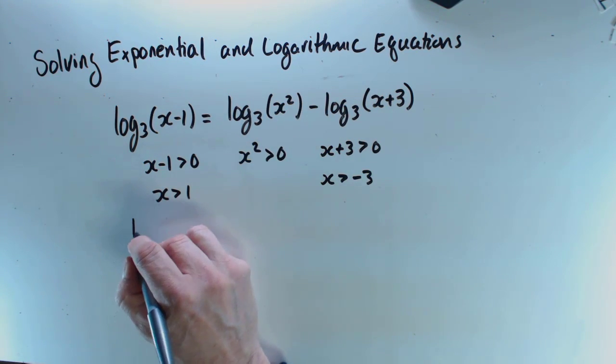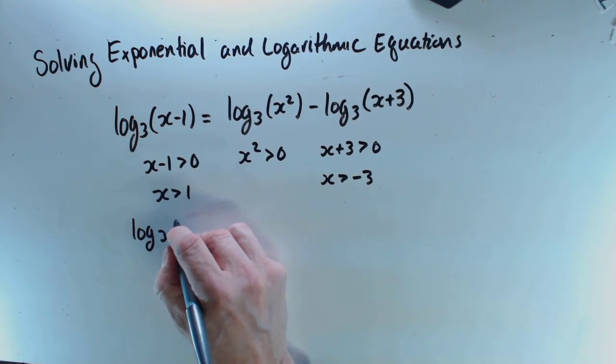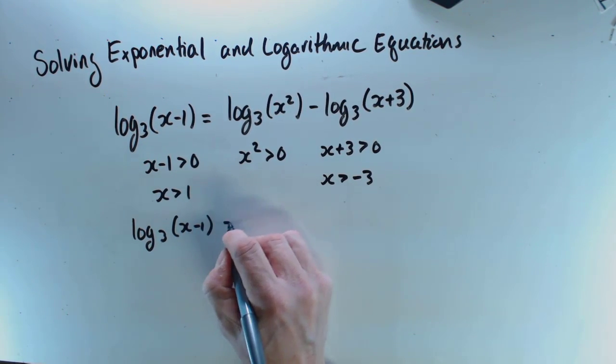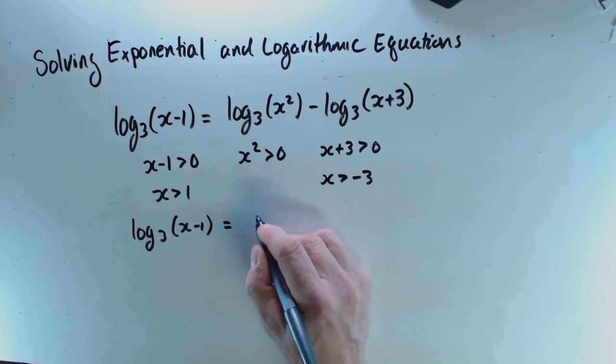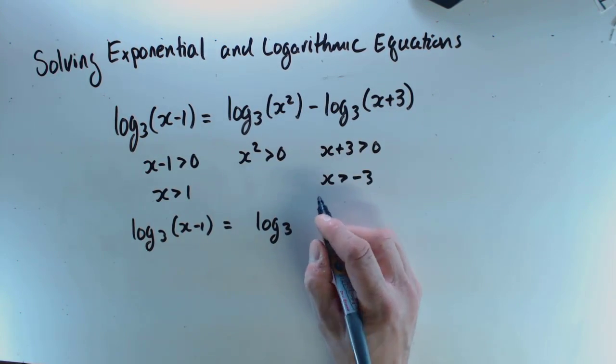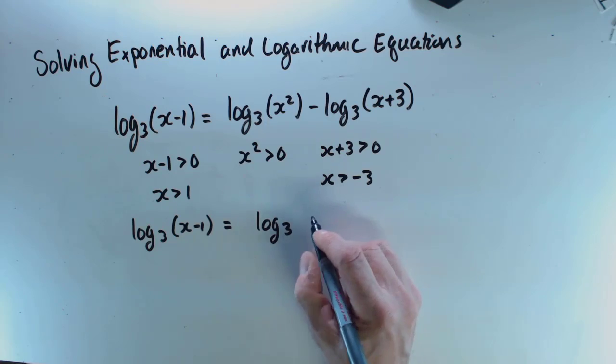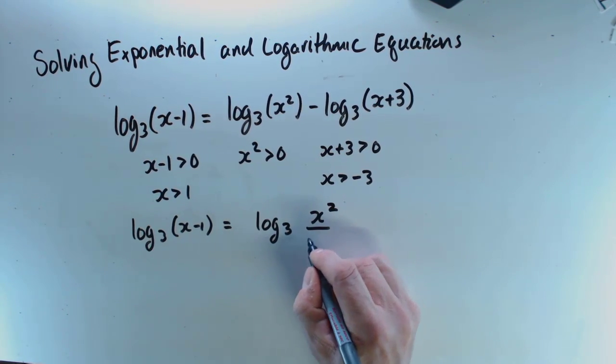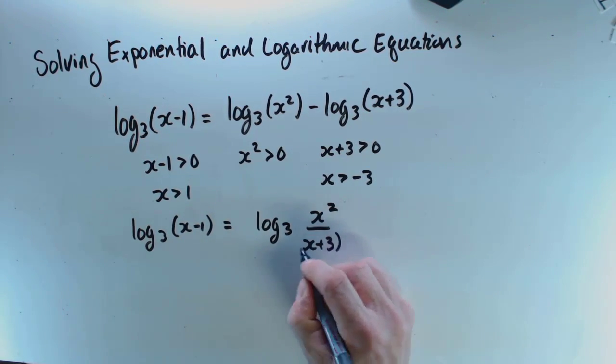so first thing we're going to do is log base 3 of x minus 1 equals log base 3... and look, because this is the difference of two logs, I can turn it into the log of a quotient: x squared over x plus 3.